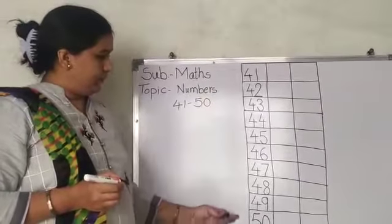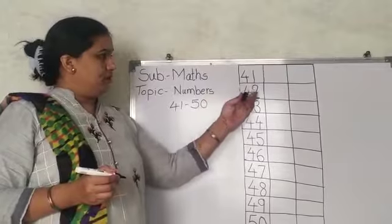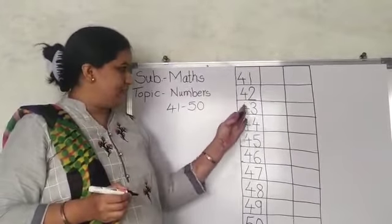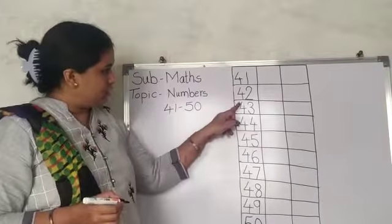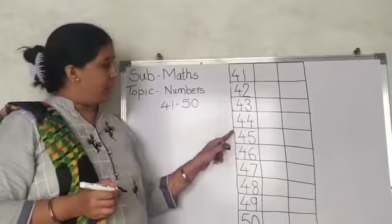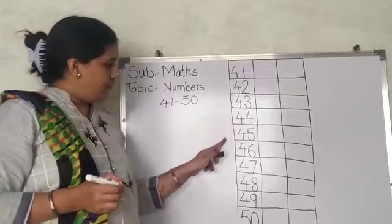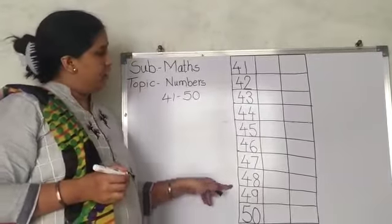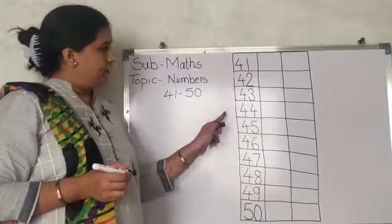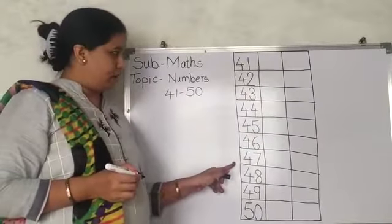Look at this line. All numbers are of same size and touch to the bottom line. You also have to pay attention while writing. Touch to the bottom line. Write the digits of same size.